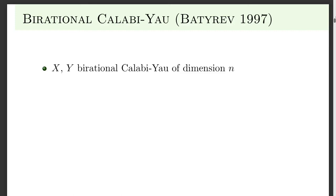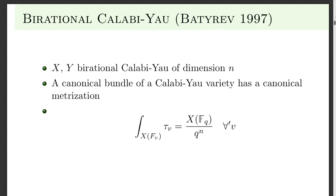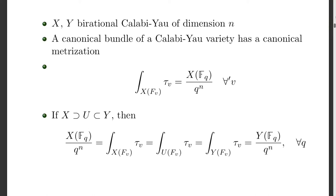You look at birational Calabi-Yaus over a number field. It's a trivial canonical line bundle, so there's a canonical metrization — it's just constants. The formula says that when you integrate you get the number of q points. Viktor Batyrev observed that if you have two birational Calabi-Yaus, you integrate first there — it's the same as integrating over the open part. The open part is the same in both, so you get the same integral, and the measures give the same answer. Then you get an identity for the number of q points.